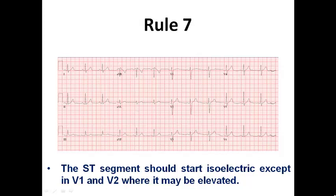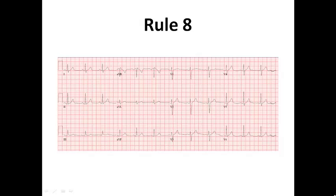Rule number seven checks the ST segment. It mentions that the ST segment should start isoelectric, except in V1 and V2 where it may be slightly elevated and this is considered normal. So the ST segment should be isoelectric in all ECG leads except V1 and V2.